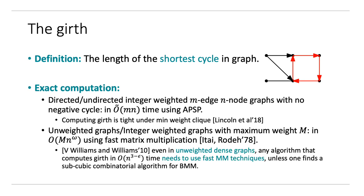On the lower bound side, using subcubic equivalences of Williams et al., it is known that even in unweighted dense graphs, any algorithm that computes the girth in order N to the 3 minus epsilon time needs to use fast matrix multiplication techniques, unless one can obtain a subcubic time combinatorial Boolean matrix multiplication algorithm. So basically these results show there is not much hope for improving the exact computation bounds for the girth, unless there is a breakthrough for another famous problem, and so we resort to approximation.